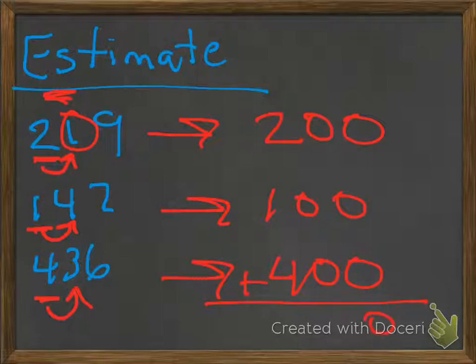So now we have our estimates. We're going to add 0, 0, 2 plus 1 is 3, plus 4 more, 7. So we get an estimate of about 700.